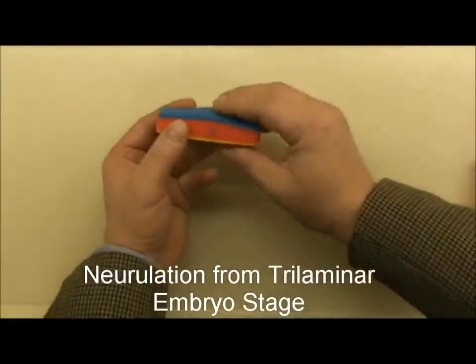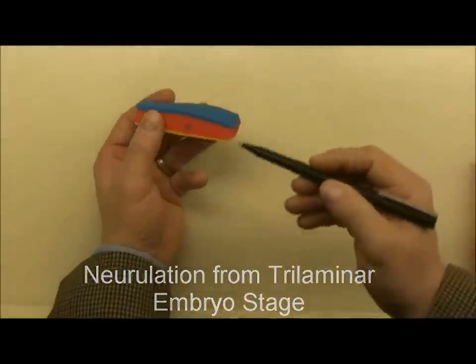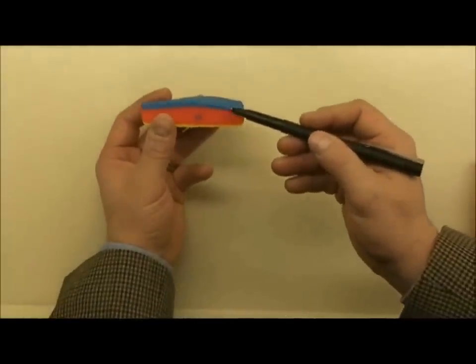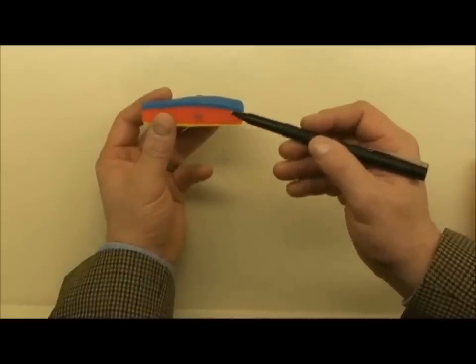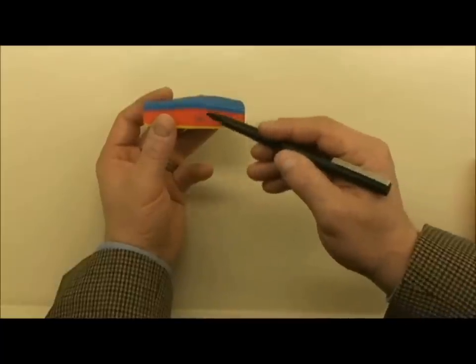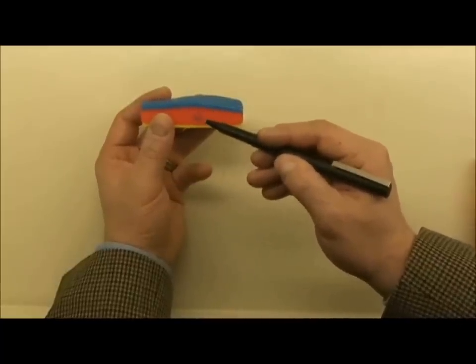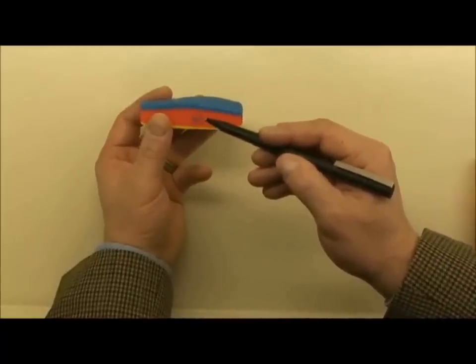Alright, now as we talked about before, we've gotten to the point of the trilaminar embryo, ectoderm, mesoderm, and endoderm, blue, red, yellow, all kind of controlled by the signals that are coming off the little purple notochord that's located right here.